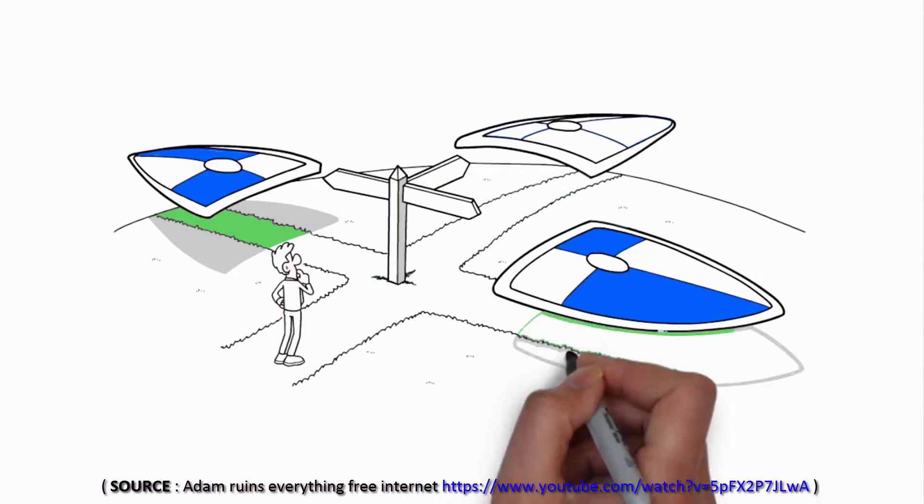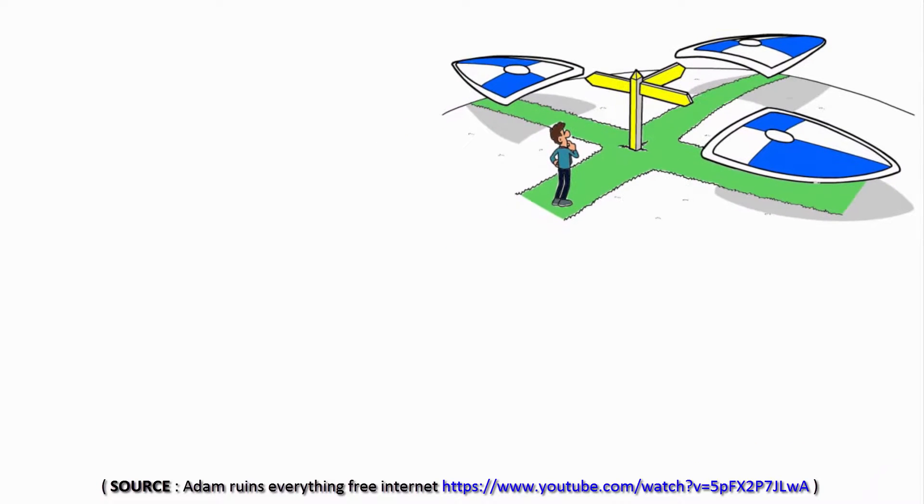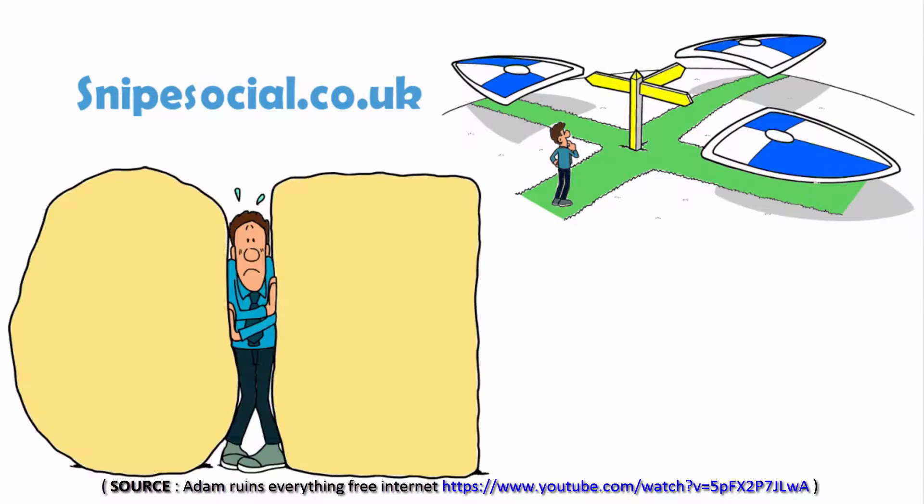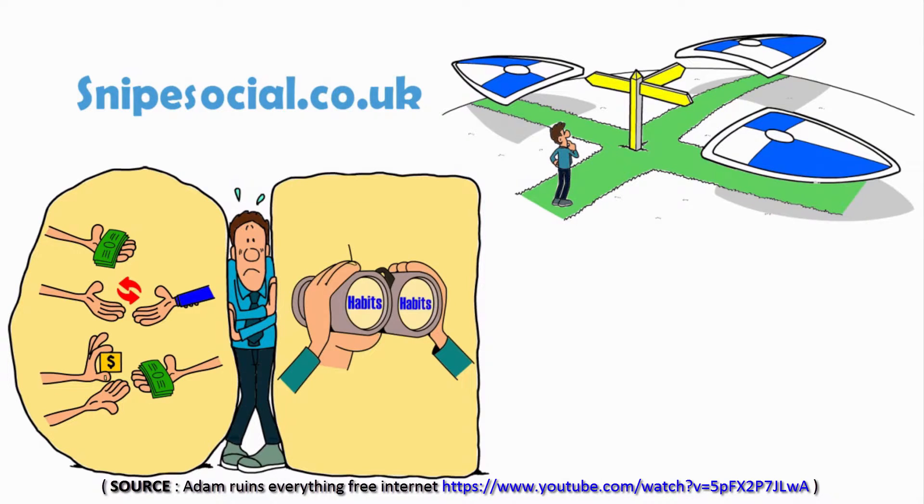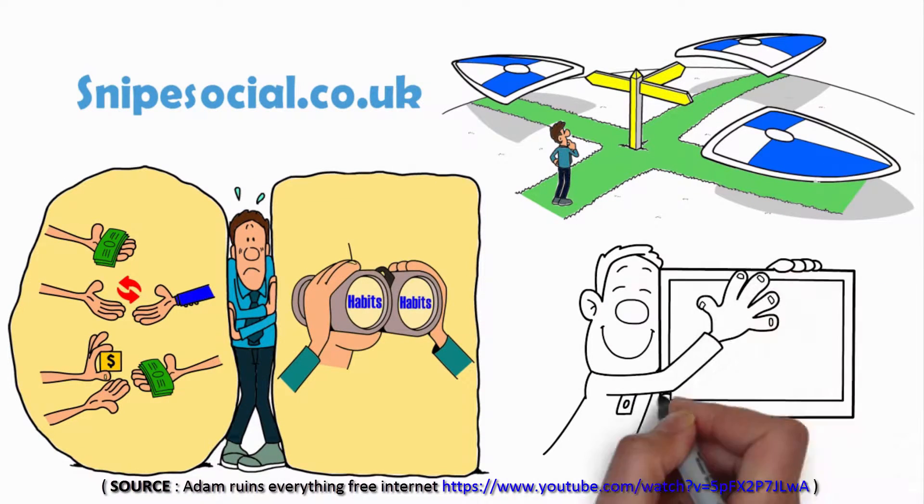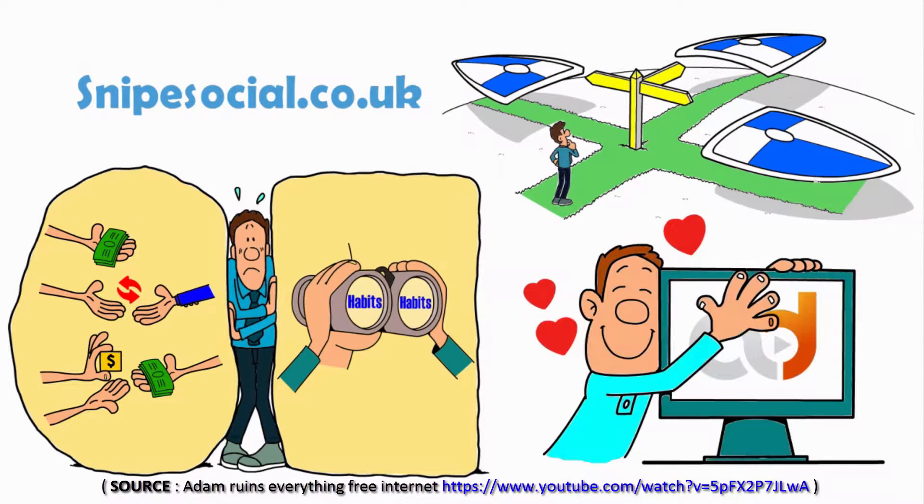Well, why not join the social network that respects your privacy? Snipesocial.co.uk doesn't sell your data. We don't target you based on your net habits. The only ads we show are based on the page you're on, not who you are.